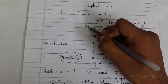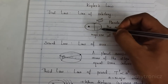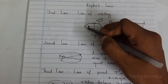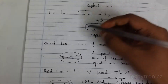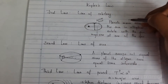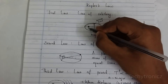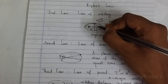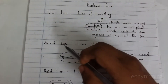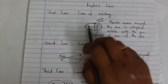Consider this as the sun. A planet moves around the sun in the form of an elliptical path. When it moves in elliptical form, this area will be the minor axis and this area will be the major axis. The major axis is considered as A and the minor axis is considered as B. So this is the first law — planets move around the sun in elliptical orbits.